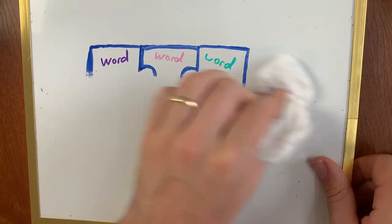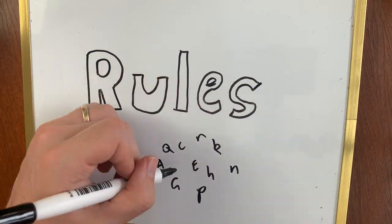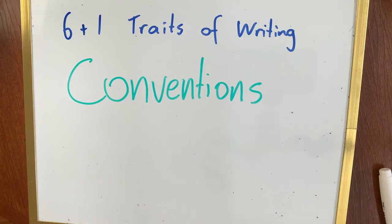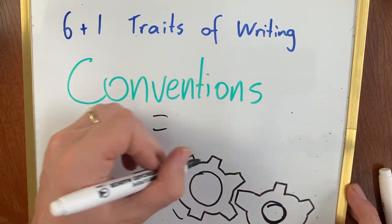But there are rules that make it easier, and thank goodness there are. If we didn't have any rules, our language would just fall apart. Conventions are the rules around language. Conventions are the writing that looks at how writing works mechanically. It helps the meaning come across.